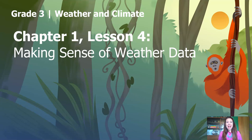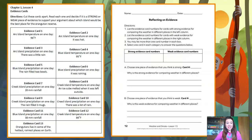Hi, welcome back. I'm Scientist Kate. This is Grade 3, Weather and Climate, Chapter 1, Lesson 4, Making Sense of Weather Data. For this lesson, you're not going to need any materials to do an investigation, but you will need these two documents. One is a set of evidence cards that we're going to be sorting. The other one is a document called Reflecting on Evidence that you can find in your student investigation notebook. All you need is curiosity and excitement to learn. Are you ready? Let's go.